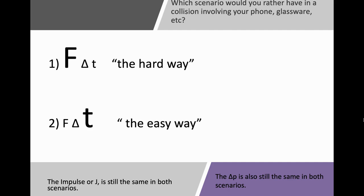Which scenario would you rather have in a collision involving your phone, glassware, or a football tackle? Would you rather have it the hard way or the easy way? The impulse J is still going to be the same in both scenarios. The delta p, or change in momentum, is also still going to be the same. The difference is the amount of force felt over the amount of time. In scenario one, you have a larger force felt in a shorter amount of time; in scenario two, a smaller force applied over a longer amount of time.